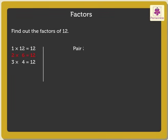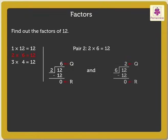Pair 2: 2 into 6 is equal to 12. Here, when we divide 12 by 2, we get the quotient as 6. And if we divide 12 by 6, we get the quotient as 2. In both the cases, the remainder is 0. Thus, it means that 12 is divisible by 2 and 6.